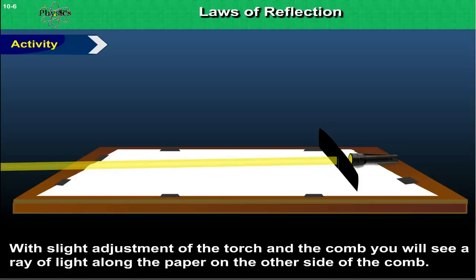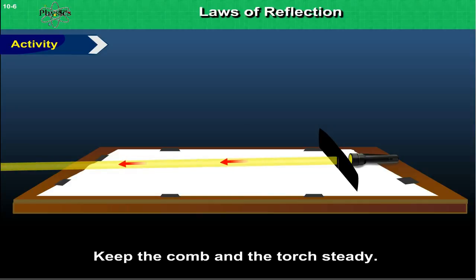With slight adjustment of the torch and the comb, you will see a ray of light along the paper on the other side of the comb. Hope your hand is steady because you have to keep the comb and the torch steady.